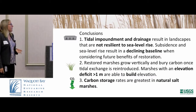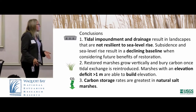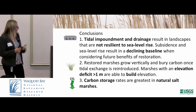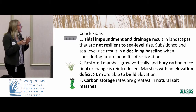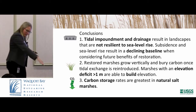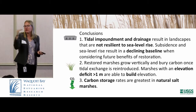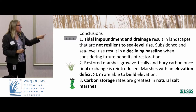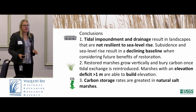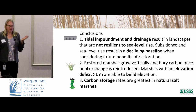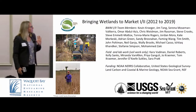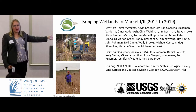In conclusion: tidal impoundment and drainage create landscapes that are not resilient to sea level rise — we need to build sustainable landscapes. In addition, these systems don't store as much carbon. Because carbon and elevation are intrinsically linked, these impaired systems have a declining baseline, meaning the benefit of making changes now is actually greater: if you're going downhill but can change that trajectory to go uphill, that's better than staying flat. These systems can build elevation even if the elevation deficit is over a meter — really key because the Herring River proposed restoration has a significant elevation deficit to overcome. Carbon storage rates are greatest in our natural systems, so it's great to keep systems in a natural state. Thank you.